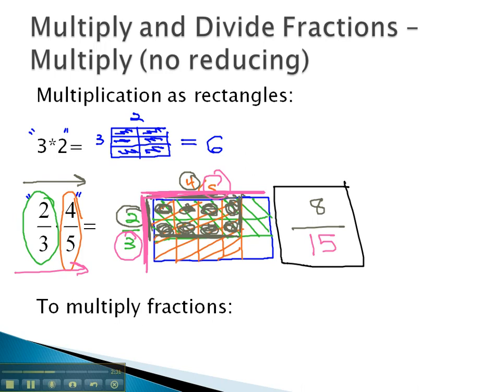This suggests the pattern for multiplying fractions. We multiply fractions by multiplying across the numerators to get our new numerator and denominators to get our new denominator.